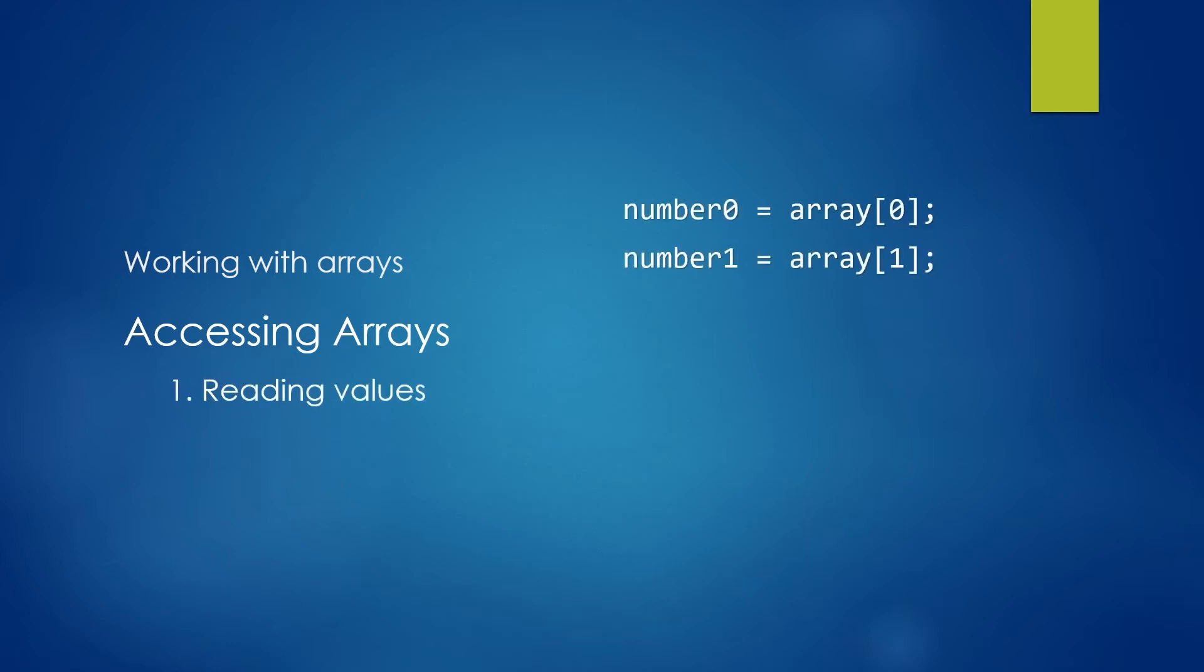So on the right, we can assume that we have an array inside a variable named array. And if you wanted to get the first number from it, we can simply use the square bracket notation. So we have array square brackets, zero close square brackets, which can be read as array at position zero. Below, we see how we can do the exact same thing with another position. So we can say number1 equals array at position one.